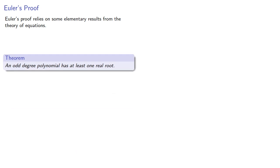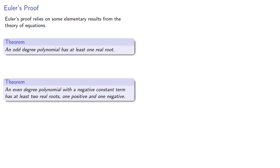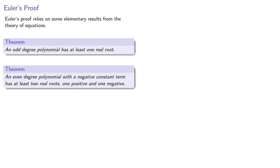A few others: an odd degree polynomial has at least one real root, and an even degree polynomial with a negative constant term has at least two real roots, one positive and one negative.